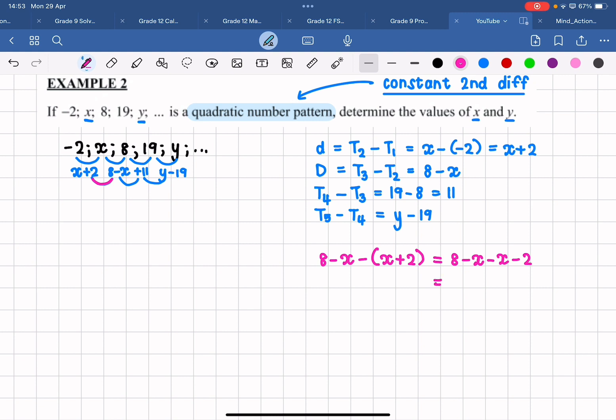Remember when you are subtracting more than one term, you always have to put the minus in front of the brackets and then put those two terms in brackets to ensure that you are actually subtracting both terms. So we are going to end up with 6 minus 2x if you work that out.